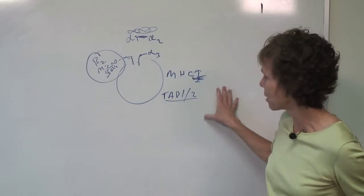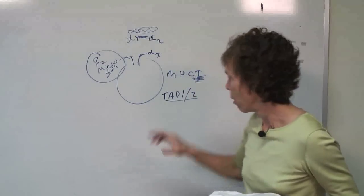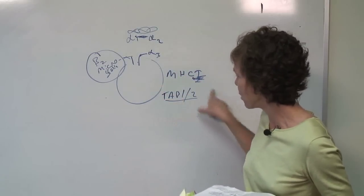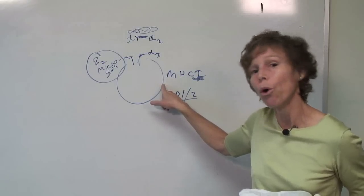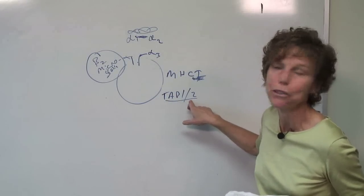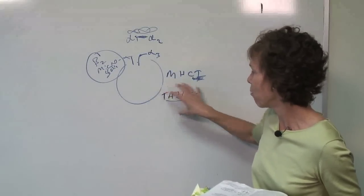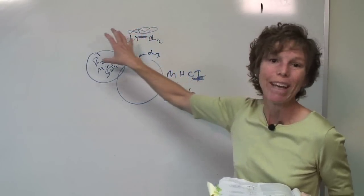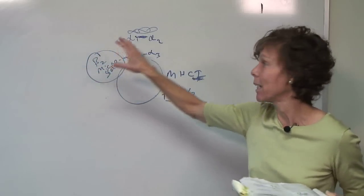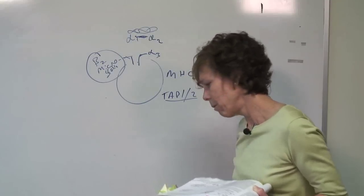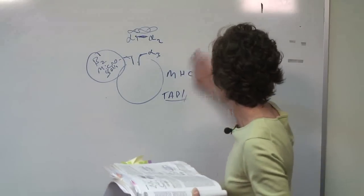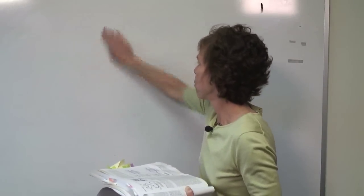Some pathogens can thwart TAP1 and TAP2. For example, herpes simplex virus 1 and 2 interfere with TAP1 and TAP2, so you cannot display herpes simplex antigen in the MHC class 1 pocket. This means CD8 positive cells and NK cells cannot eliminate that virus — which is a defense mechanism of herpes simplex 1 and 2.